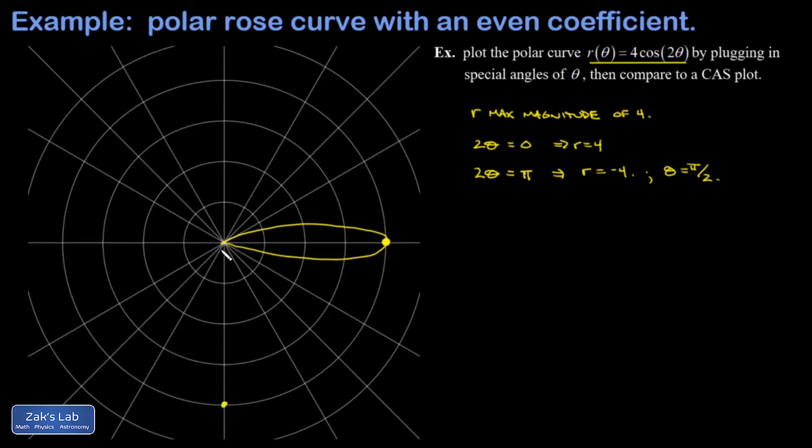So I continue this way and I go to where 2θ = 2π, and r would be equal to positive 4 again because the cosine of 2π is equal to 1. And my angle for θ is going to be π. So when I'm aiming straight to the left I go 1, 2, 3, 4 spaces and I'm at the tip of my third petal.